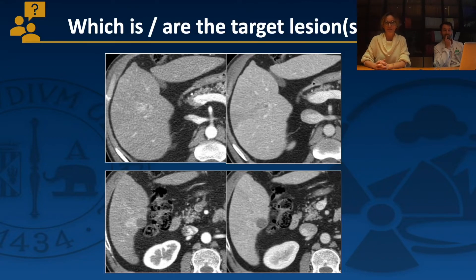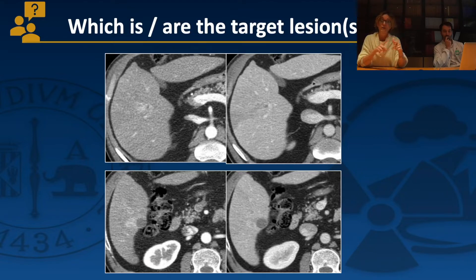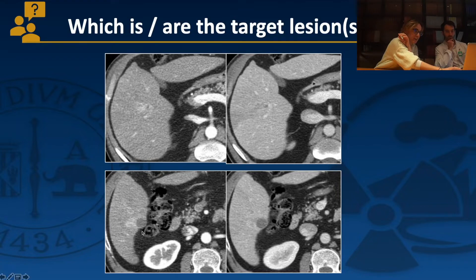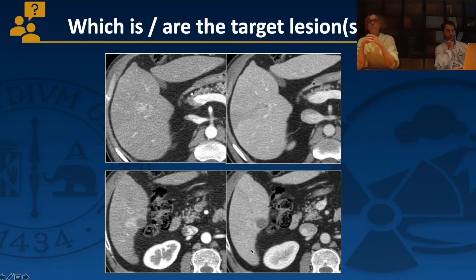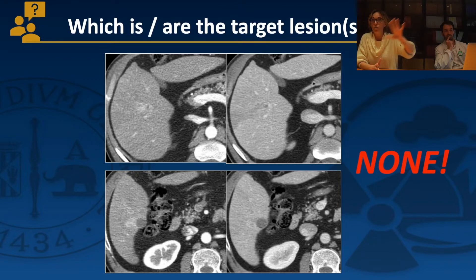For mRECIST target lesions, the lesion must be measurable, at least 1 cm, suitable for repeated measurements, with arterial enhancement, and ideally untreated previously. An infiltrative HCC with ill-defined margins is not measurable — it cannot be reliably reproduced between observers. Such a lesion is classified as non-target. Portal vein tumor thrombosis and infiltrative lesions are by definition non-measurable and therefore always non-target.